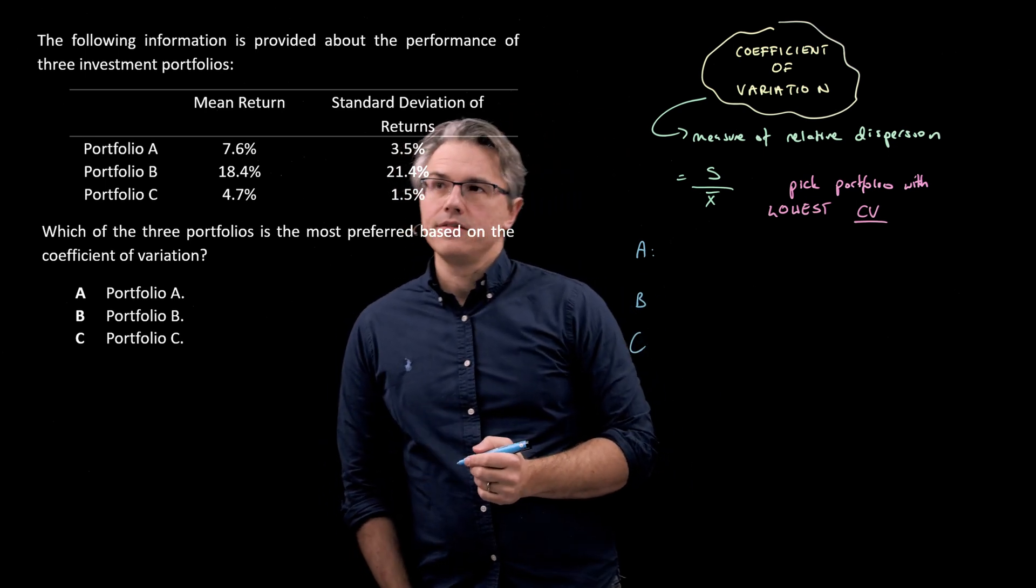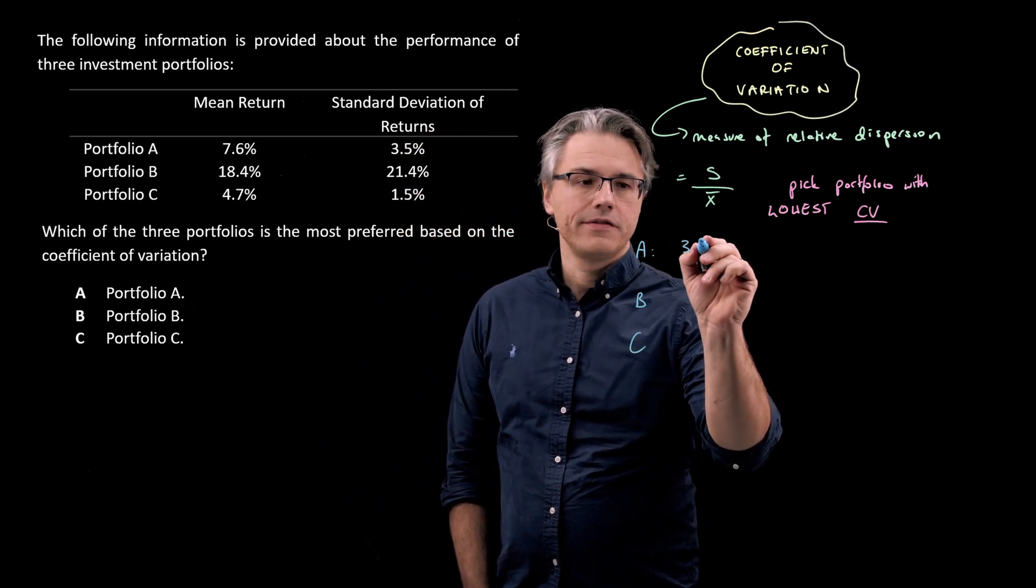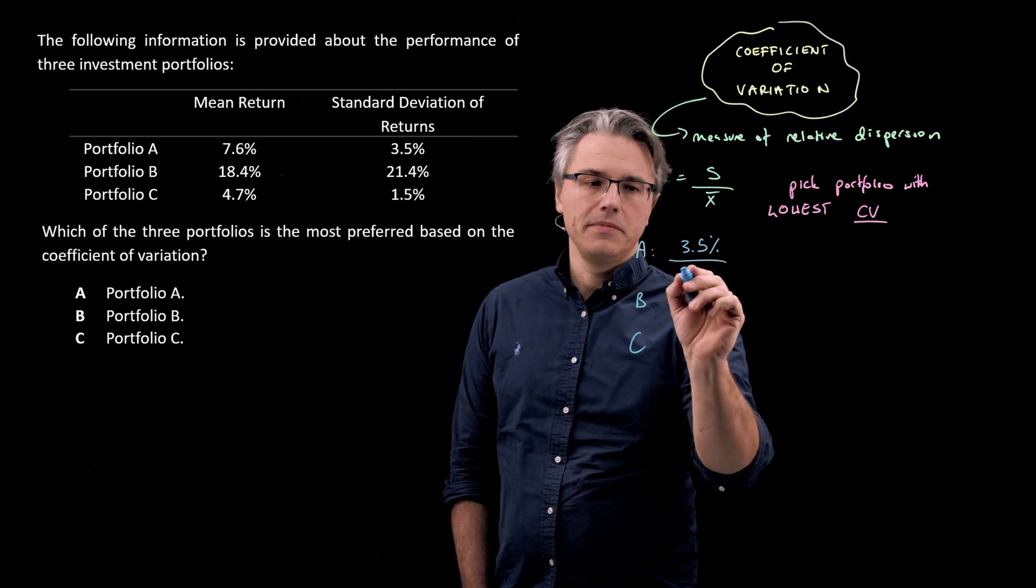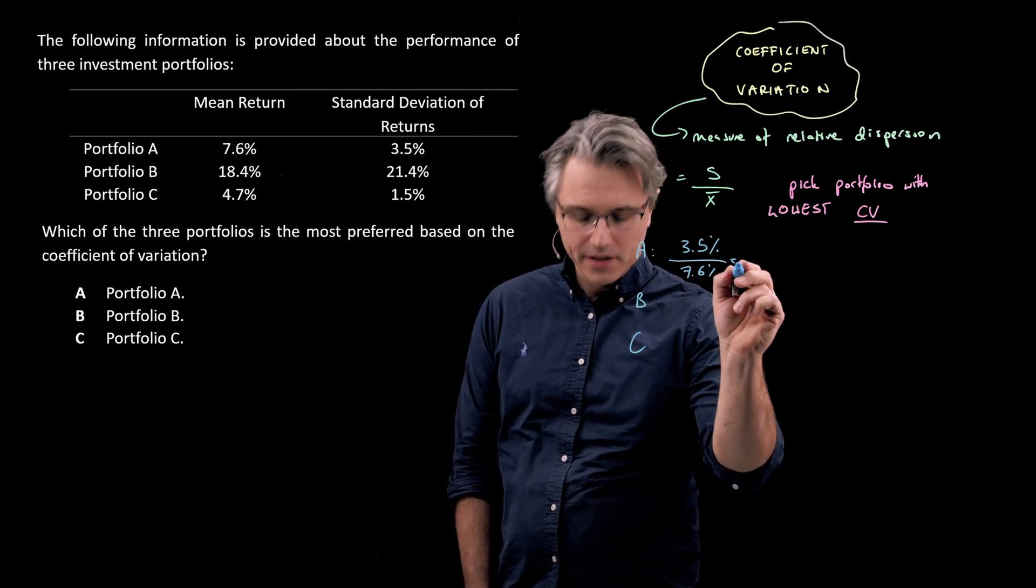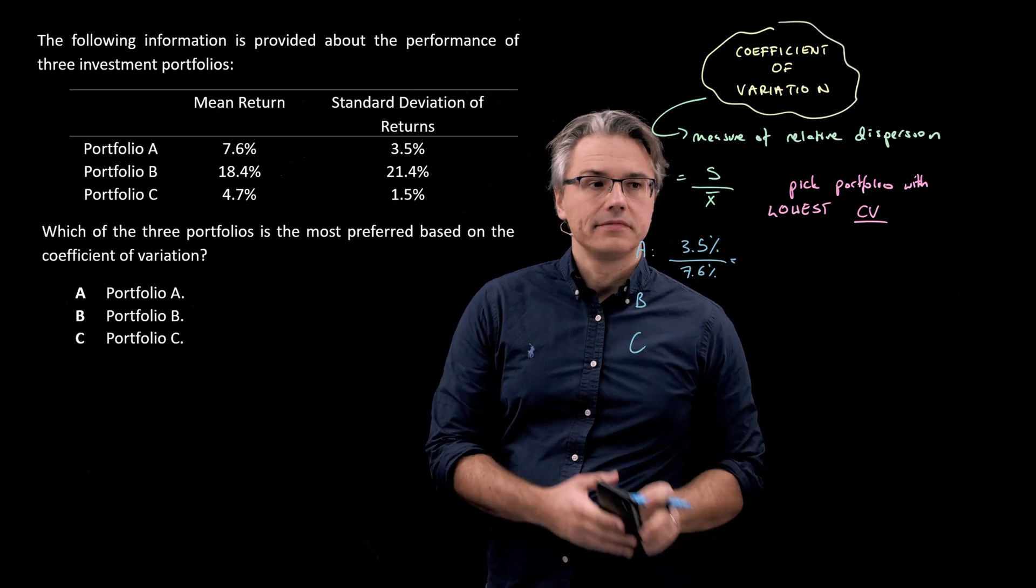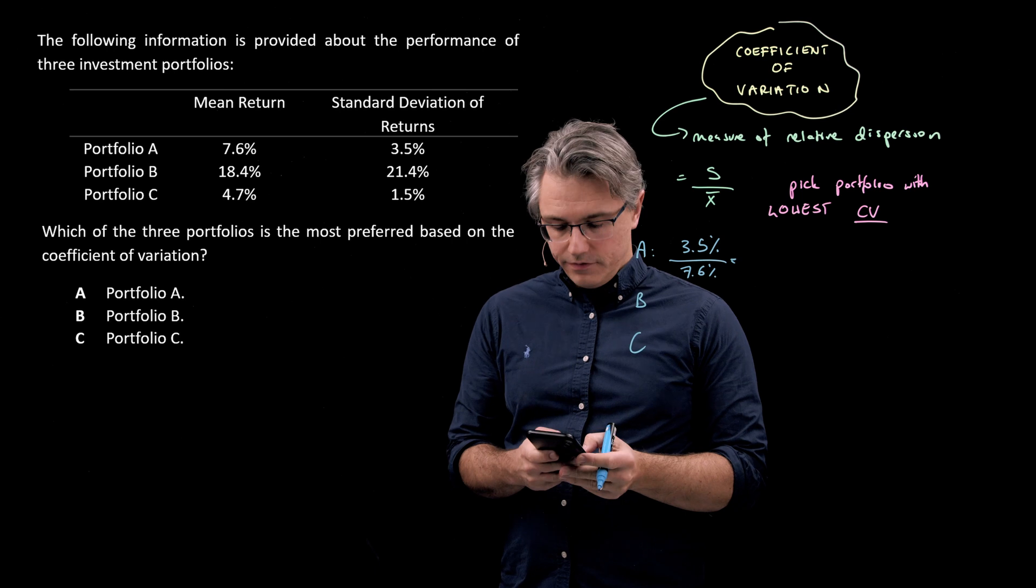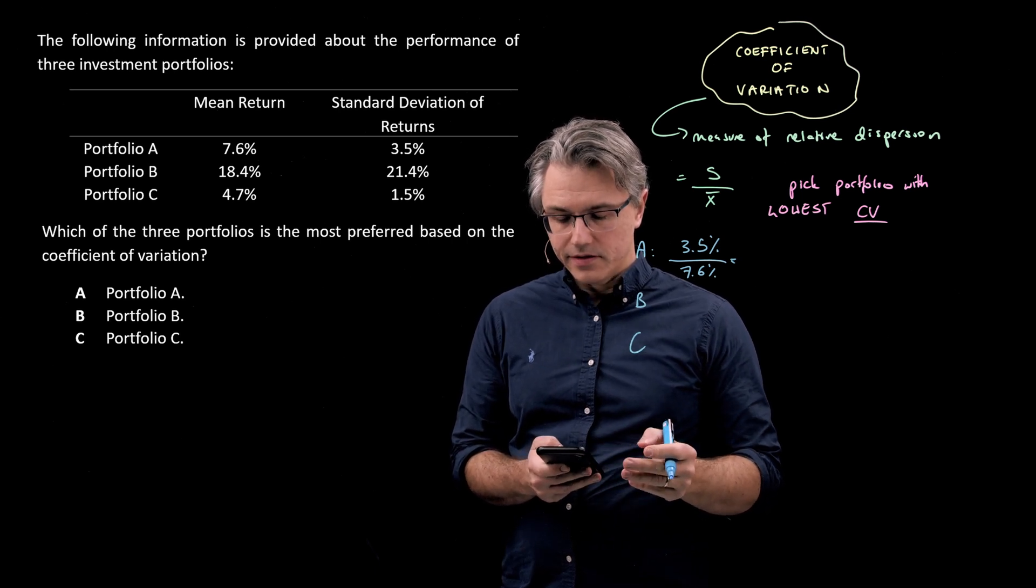So for A, we're going to have 3.5%, that's the standard deviation, divided by the mean return, which is 7.6. And let's see what that gives on the calculator. 3.5 divided by 7.6.